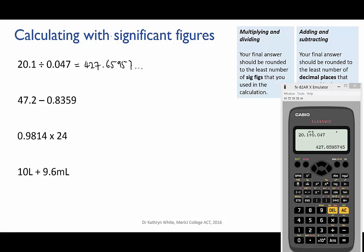Now of the two numbers that we used in our calculation, 0.047 has the fewest sig figs. It has two. So our final answer must also be rounded to two sig figs. This gives us 430.